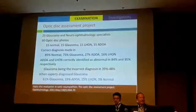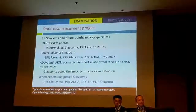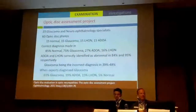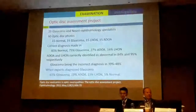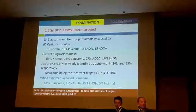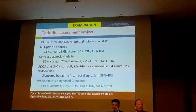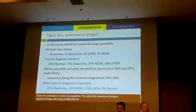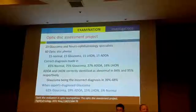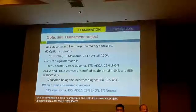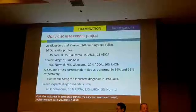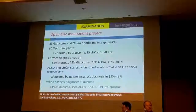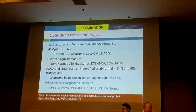This gets tricky even for experts. In a study where 23 glaucoma and neuro-ophthalmology specialists were invited to assess disc photos without any clinical information, even experts made mistakes. When they diagnosed glaucoma, only 61% were actually glaucoma; 19% were dominant optic atrophy, 15% were LHON, and 5% were normal. So we are excused.